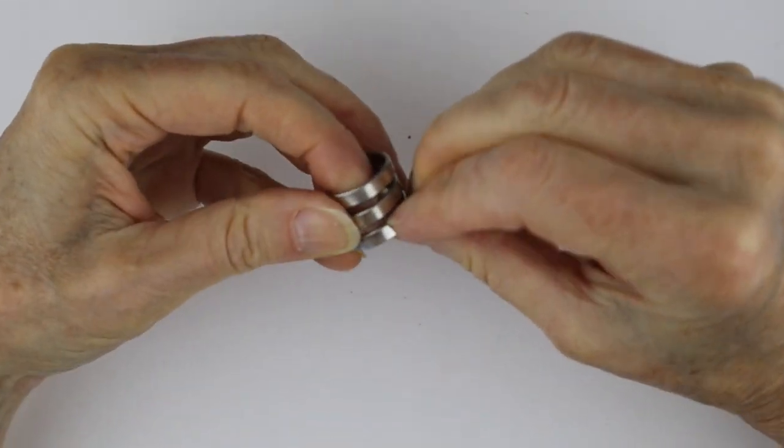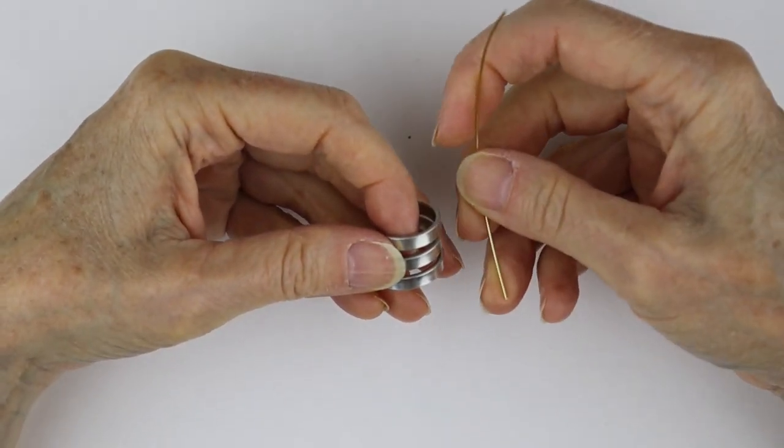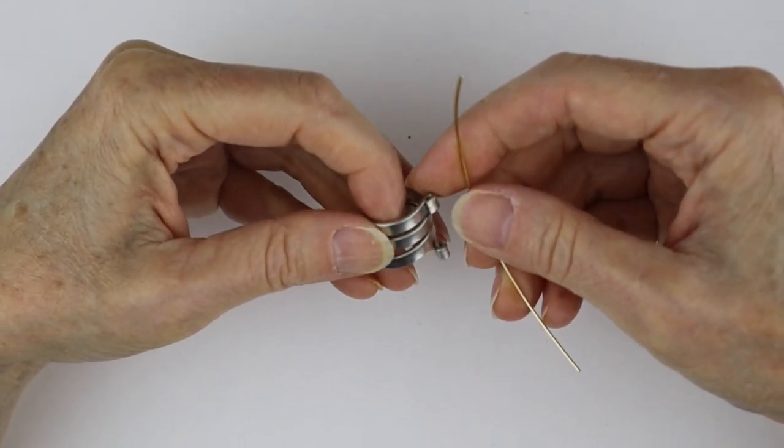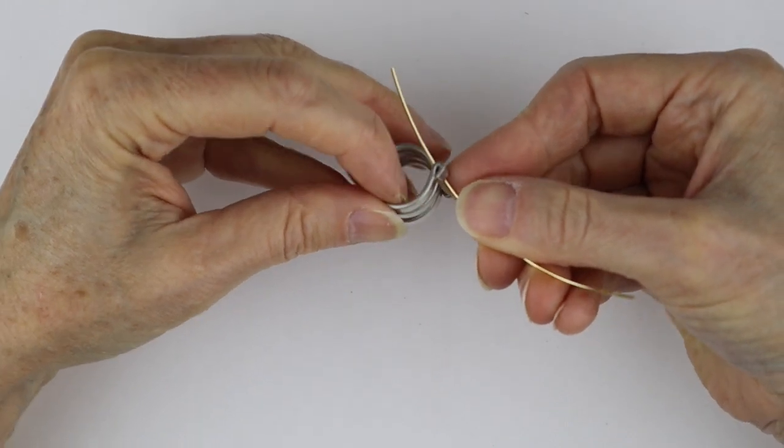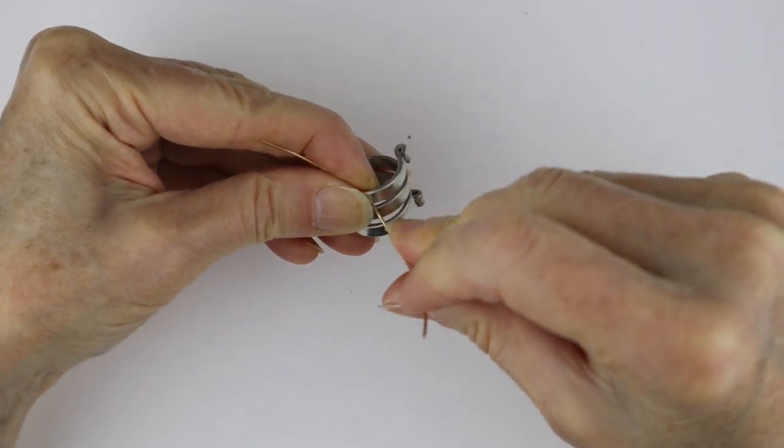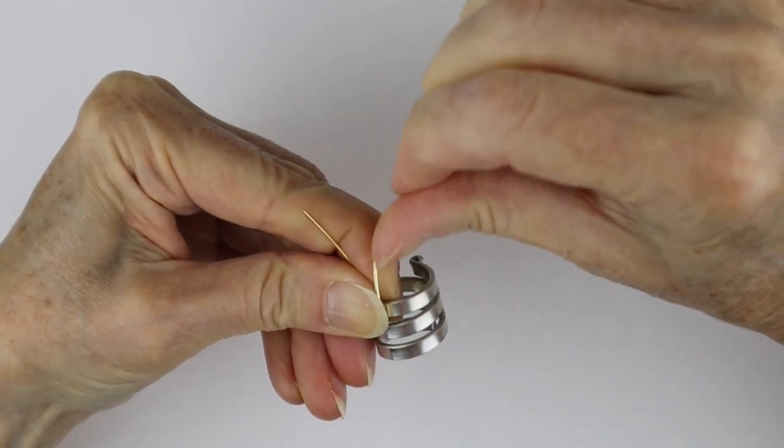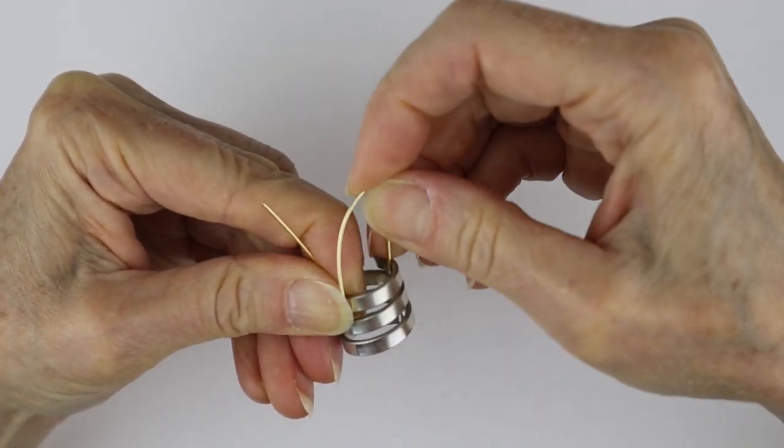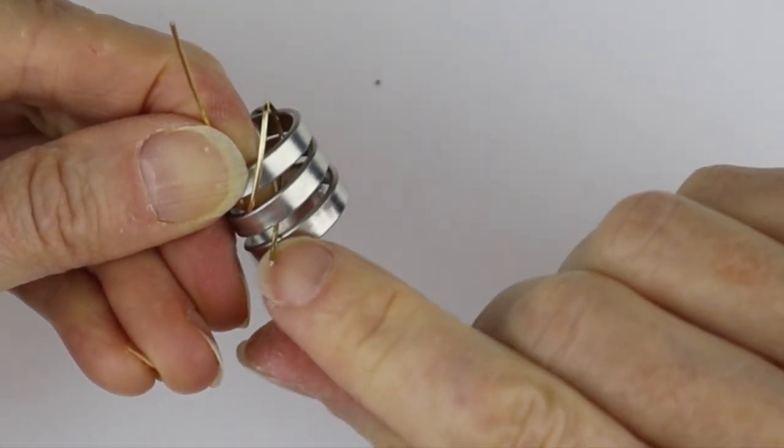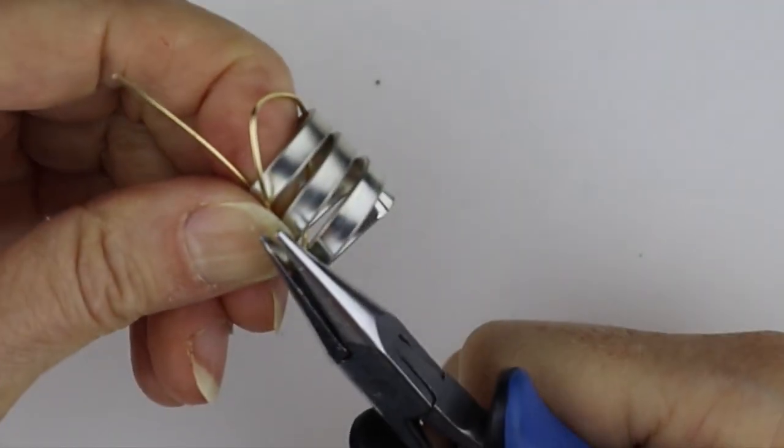We want to do different sizes depending on the size of your jump rings, so I'm going to do 20 and 24 gauge. You could also use 18 gauge wire for this. Basically what I want to do is bring the wire in between these two and bring it around. I'm going to move it over a little bit more. I'm going to bring it around here and then down through the bottom, so we're going down through the middle and up the next one.